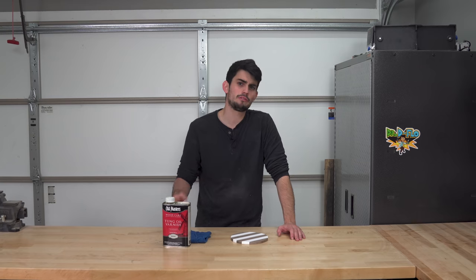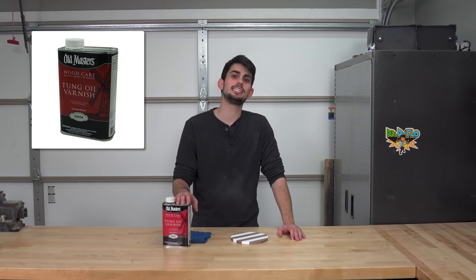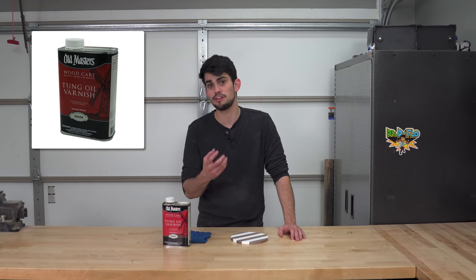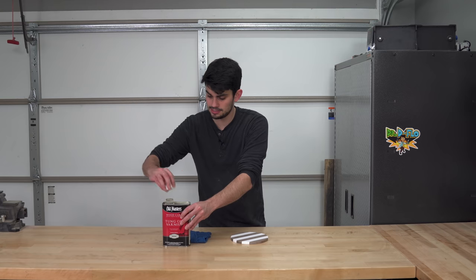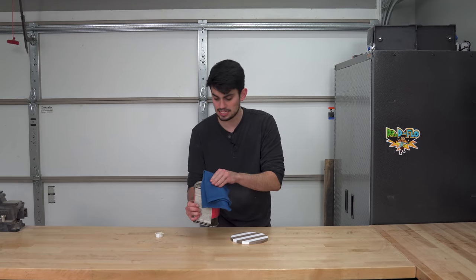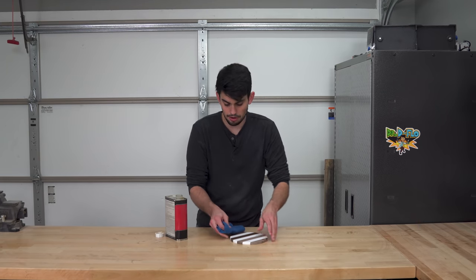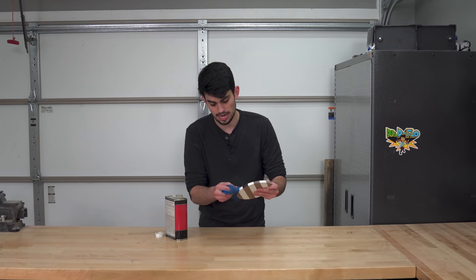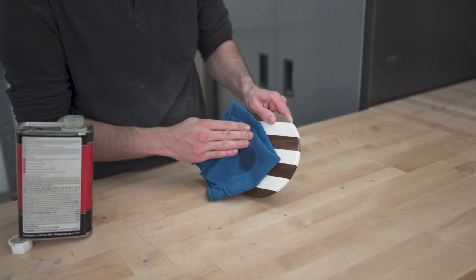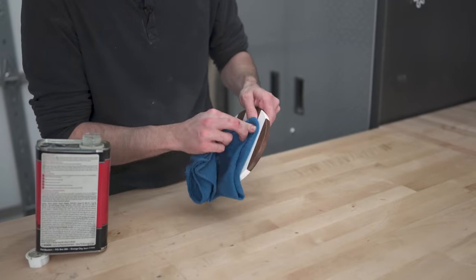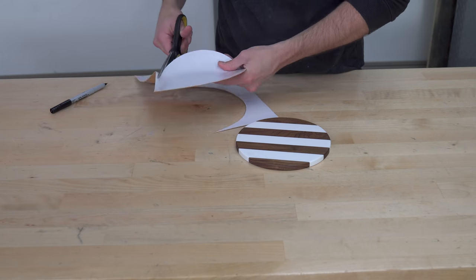Finishing the trivet requires a bit more forethought than the cutting board because it's going to be exposed to hot metals and liquids. This is a tung oil varnish by Old Masters, which I love to use on walnut because it really brings out its depth. I'm going to apply several thin layers, which will create this protective film that will prevent water and other liquids from penetrating into the wood. This is an adhesive cork sheet, which I'll stick to the back of the trivet to prevent it from sliding around when I'm trying to place a hot pot on it.